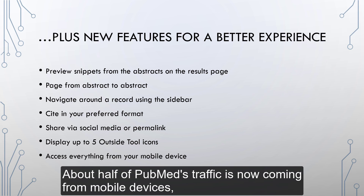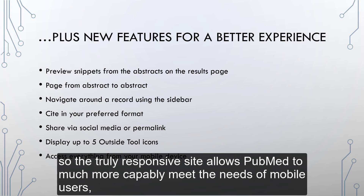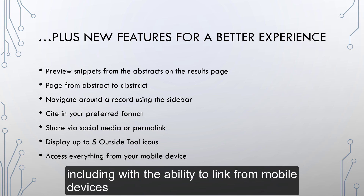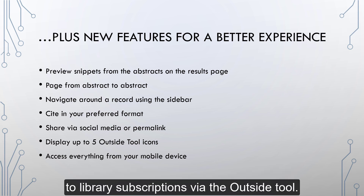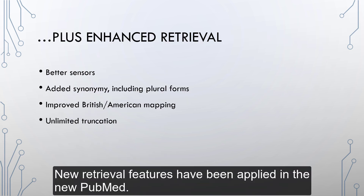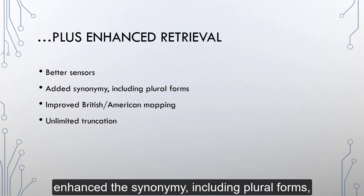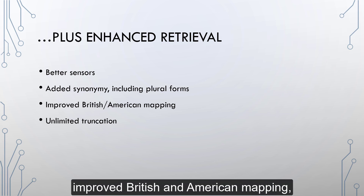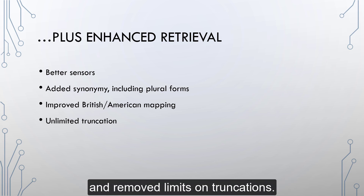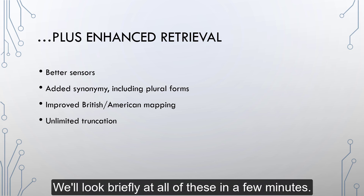About half of PubMed's traffic is now coming from mobile devices, so the truly responsive site allows PubMed to much more capably meet the needs of mobile users, including with the ability to link from mobile devices to library subscriptions via the outside tool. New retrieval features have been applied in the new PubMed. They have improved and continue to improve citation and other sensors, enhanced the synonymy including plural forms, improved British and American mapping, and removed limits on truncations.